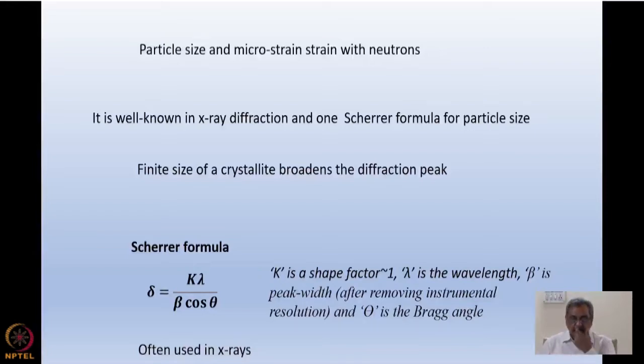The Scherrer formula tells us that δ, the broadening of the peak, is given by K λ / (β cos θ), where K is a shape factor close to 1, λ is the wavelength of the X-rays or neutrons. β is the peak width for a Bragg angle θ. This is often used in X-rays.